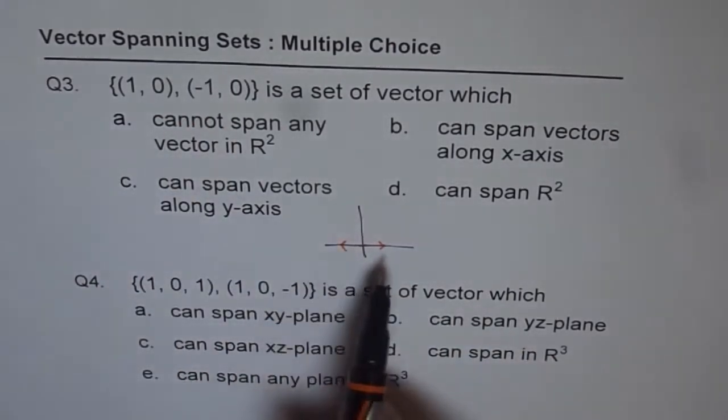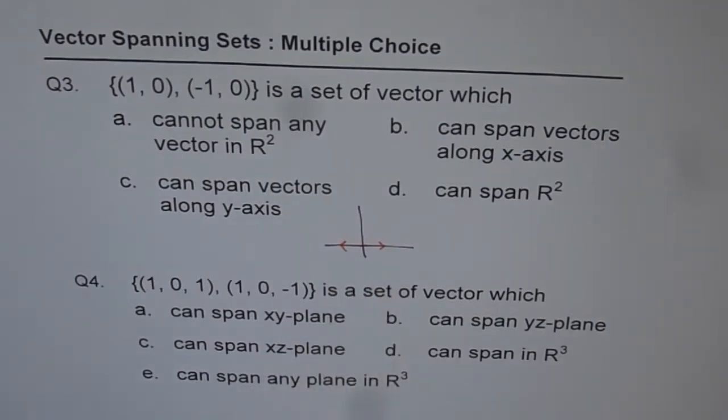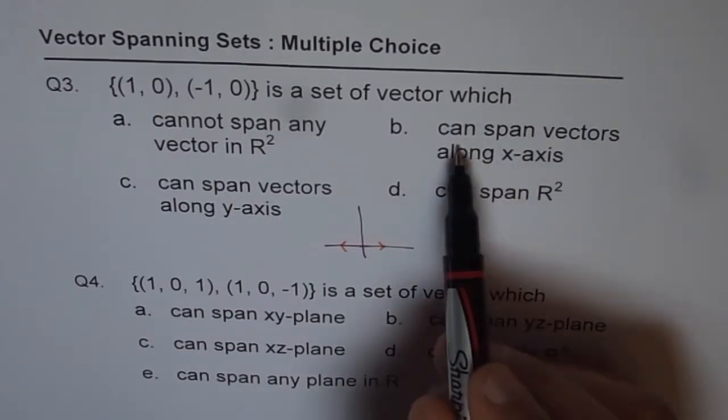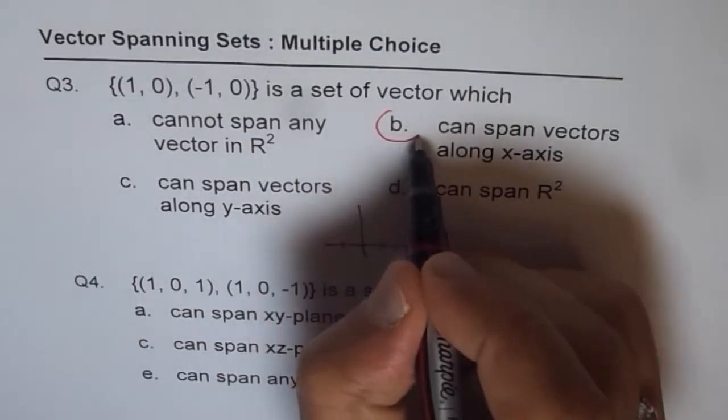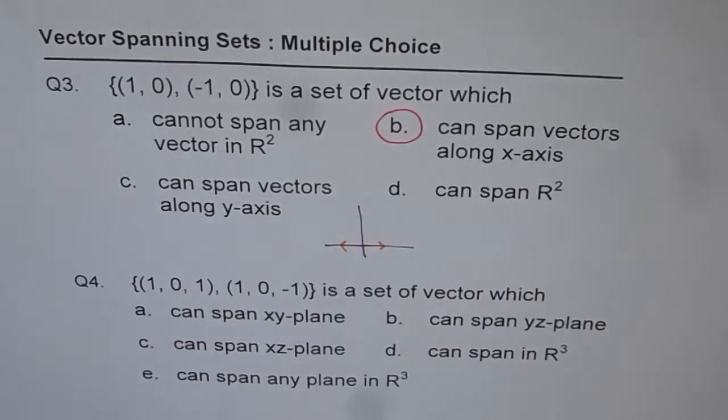Now if I have two vectors which are along x-axis, then they cannot span R², but what they can do is they can definitely represent any vector along the x-axis. So they can definitely span vectors along x-axis, so that is the option for us.